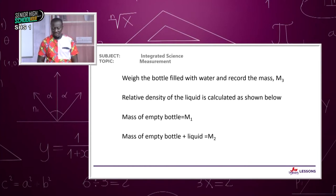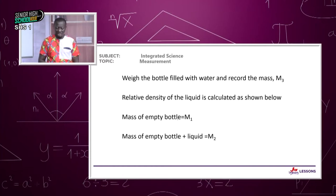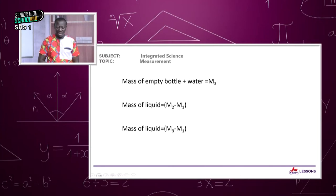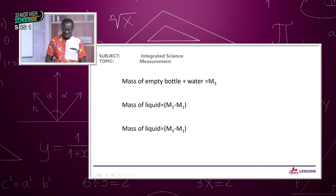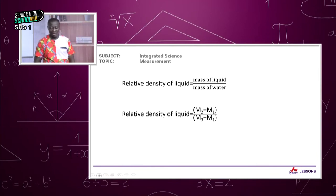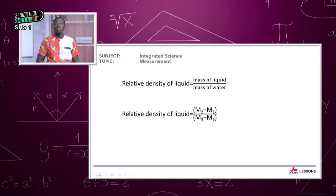The relative density of the liquid is calculated as follows: mass of liquid equals M2 minus M1, and mass of water equals M3 minus M1. The relative density of the liquid therefore equals (M2 minus M1) divided by (M3 minus M1).